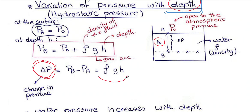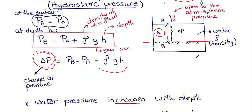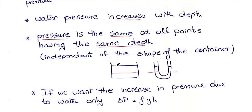All points on the same horizontal line have the same pressure because they are at the same depth H. For example, point C beside point B on the same horizontal line has pressure P₀ + ρgH, the same as point B. This is independent of the shape of the container — whether the container is irregular or U-shaped, points at the same depth in the same connected liquid share the same pressure.